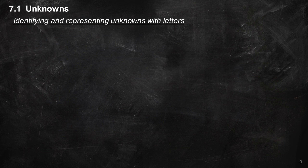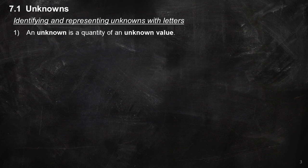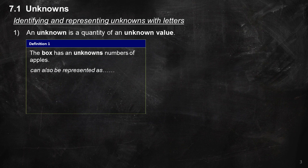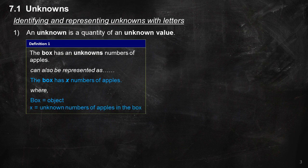7.1 Unknowns. Identifying and representing unknowns with letters. An unknown is a quantity of an unknown value. Definition 1: The box has an unknown number of apples, which can also be represented as: the box has X numbers of apples, where box equals object and X equals the unknown number of apples in the box.